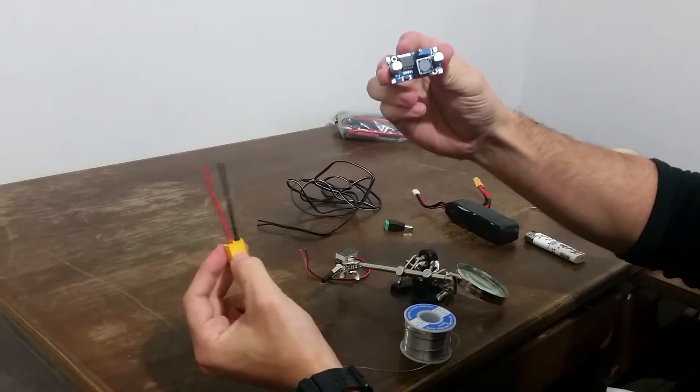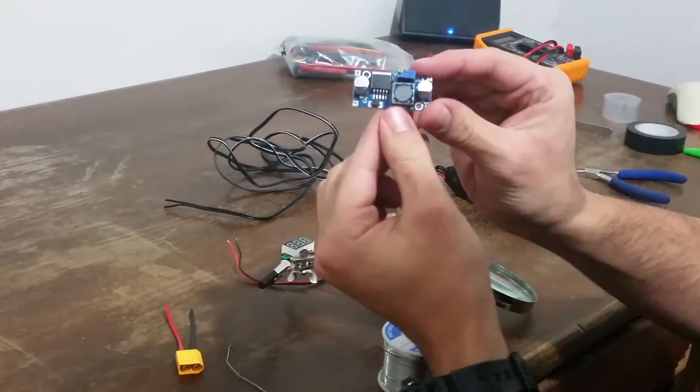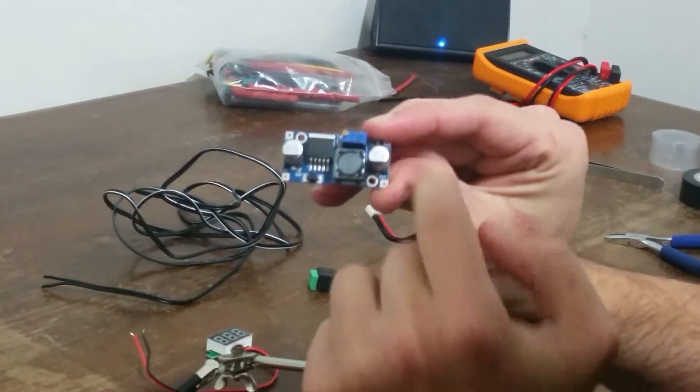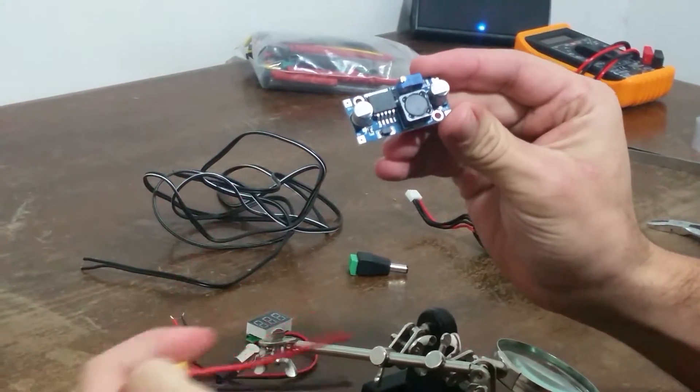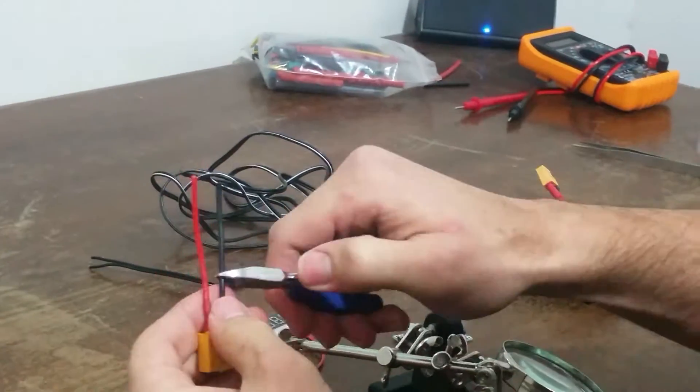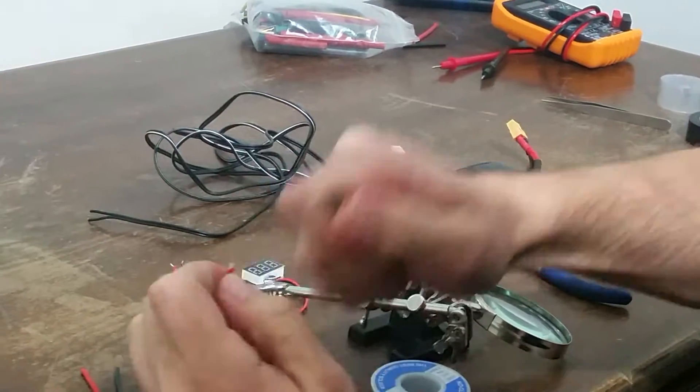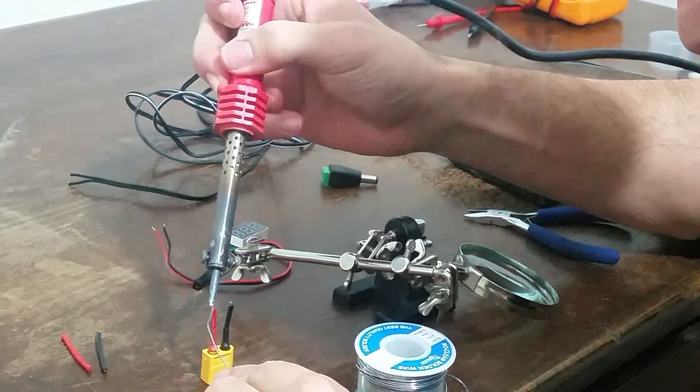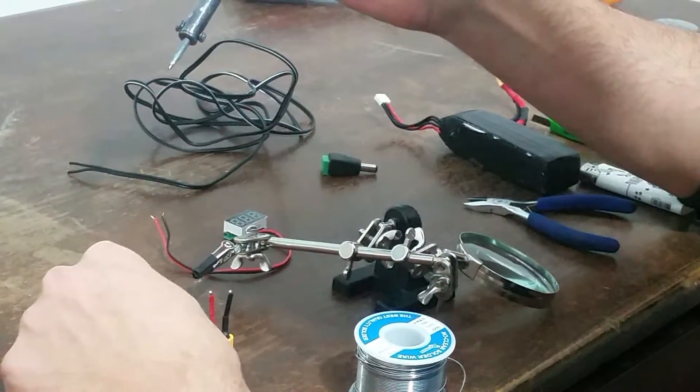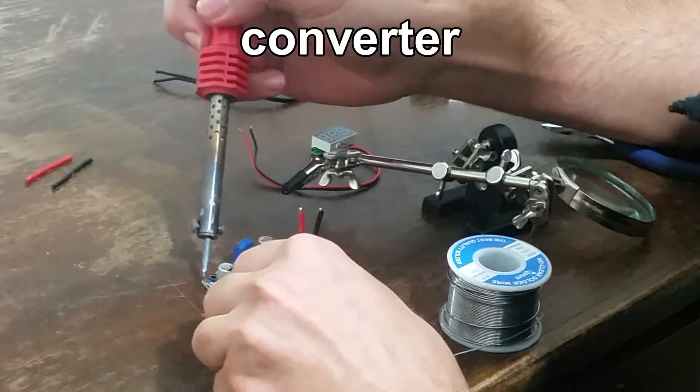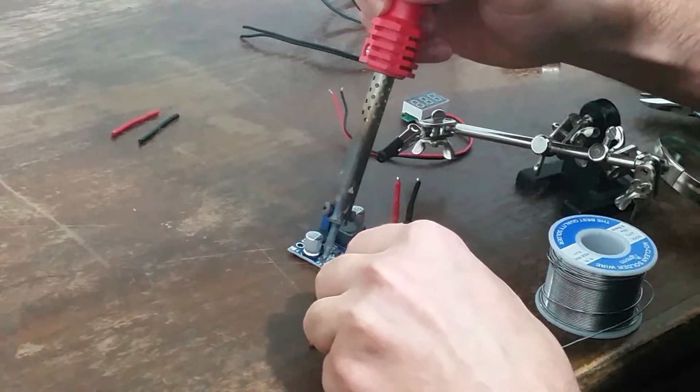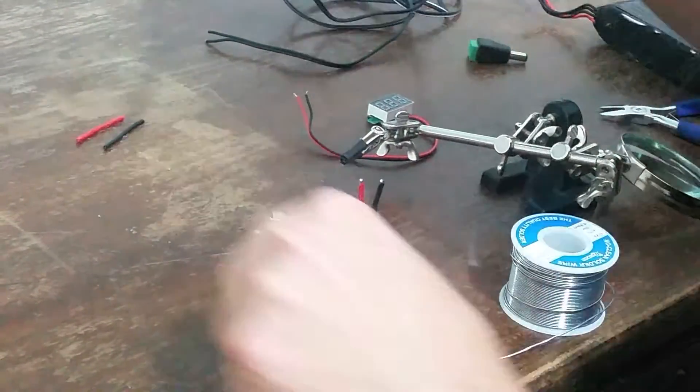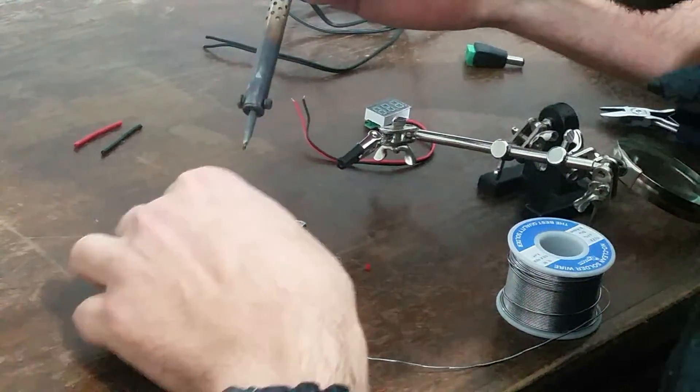Now next thing we're going to do is we're going to connect it to the step-down converter. As you can see, hopefully the camera is focused on the step-down converter, we have an in over here and out over here. So we're going to connect the XT60 lead to the input, but first I'm going to shorten it up because it's pretty long. I'm just going to add a dab of solder on there and I'm going to put solder as well also on the connector. Now I'm just going to connect the XT60 to the plus to plus, minus to minus.